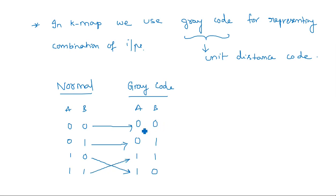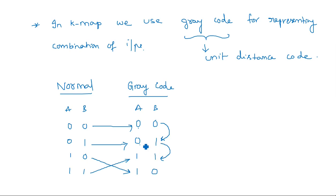What is meant by unit distance code? From 00 to 01, one digit is kept the same and only one digit changes from 0 to 1 — only one digit is changing at a time, that is the meaning of unit distance. From 01 to 11, the B variable stays the same while A changes. From 11 to 10, A stays the same and only B changes. Only one number changes every time — that is Gray code representation.